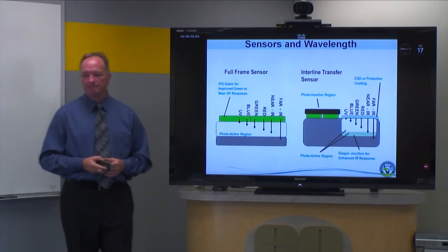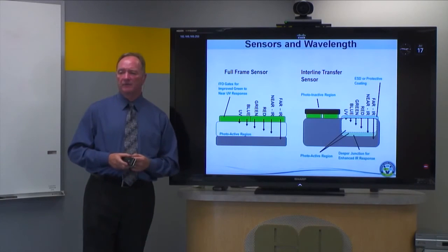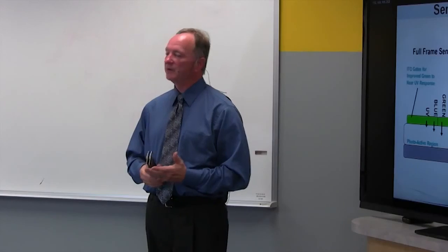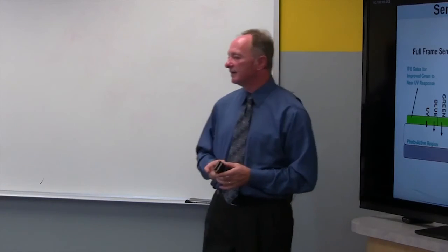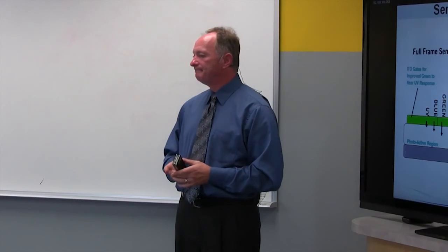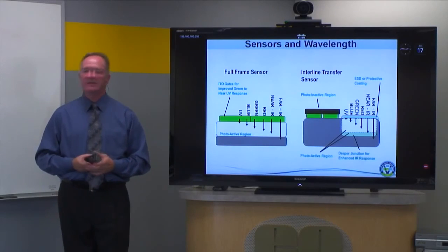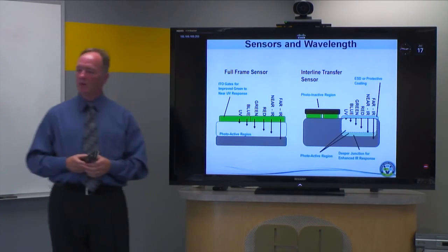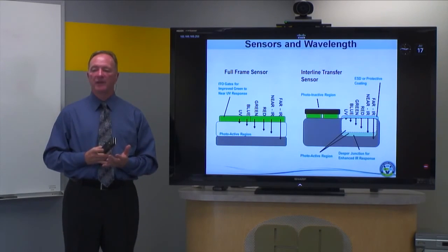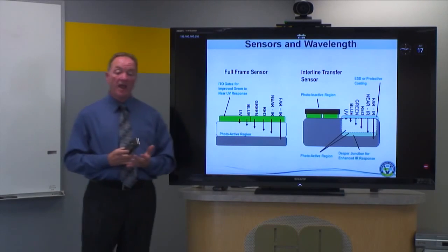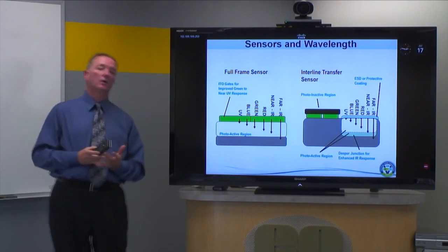On sensors and wavelength — there are a lot of changes that have happened over the years. Full frame sensors have gotten much better, adding thin films to collect short wavelength light. Interline transfer sensors have gotten deeper junctions so they can collect near IR better. Sometimes if you need to optimize sensitivity, it depends on the sample and what camera you have — but it's worth understanding that some sensors are designed specifically to collect far IR or short wavelength light better.